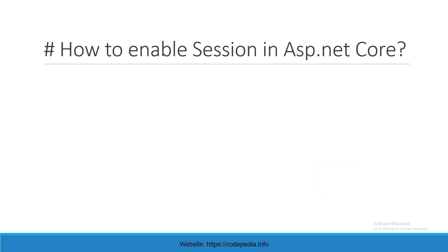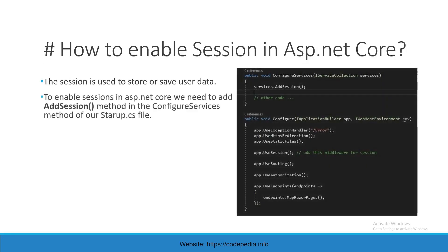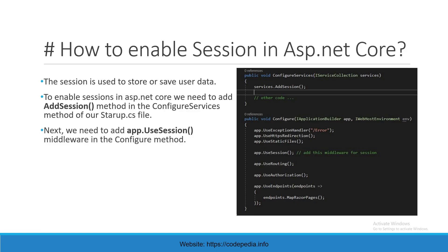How to enable session in ASP.NET Core? Session is basically used to store or save user data. To enable session in ASP.NET Core, we need to add the AddSession method in the ConfigureServices method of the Startup class. Next, we need to add app.UseSession middleware in the Configure method. As you can see, in ConfigureServices we have added services.AddSession, and in the Configure method we have added app.UseSession.